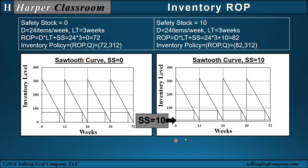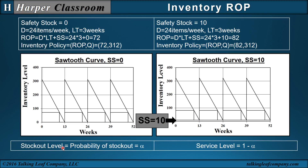The probability of having stock out in any given period is called the stock out level, alpha. The probability of not having stock out, which is 1 minus alpha, is the service level. As we increase our safety stock, the stock out level decreases and the service level increases. In other videos in the Harper Classroom, we will go deeper into the stock out level and calculate statistical safety stock.